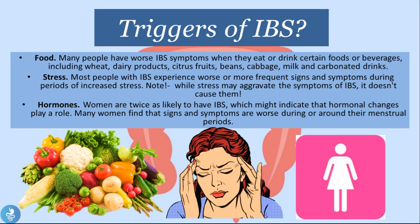Now let's talk about some triggers of IBS. Food is a major trigger — many people have worse IBS symptoms when they eat or drink certain foods or beverages, including wheat, dairy products, citrus fruits, beans, cabbage, milk, and carbonated drinks.